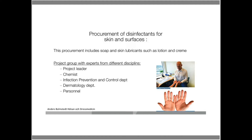This group sets up the demands together in the procurement. But before we announce these demands, we make a request for information — a very important step where we ask suppliers if they can fulfill our demands before the real procurement. Otherwise, we can end up in a situation where we set up demands that no supplier is able to fulfill. The request for information step is a really important way to improve your final procurement.